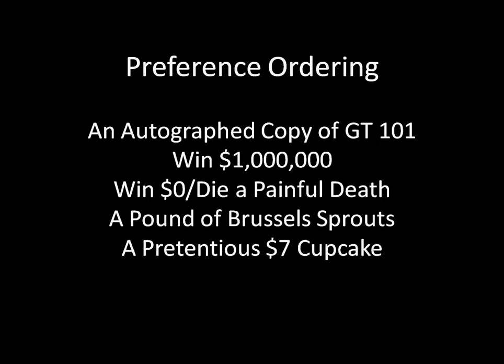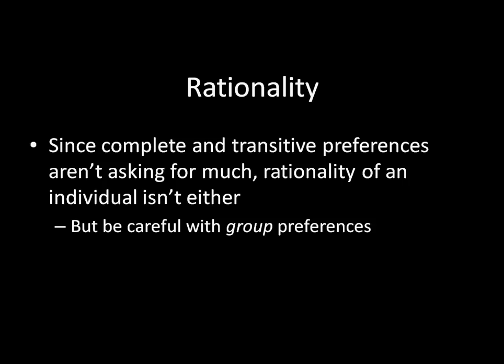So that takes care of the groundwork for rationality. Since complete and transitive preferences aren't really asking for much, talking about the rationality of an individual doesn't ask for very much either. But what we're going to see in the next lecture is that it's not so easy to guarantee group preferences that are rational — and it's a little bit weird, and you might not expect it. I hope you enjoyed this, and I hope to see you then. Take care.